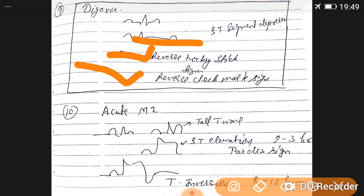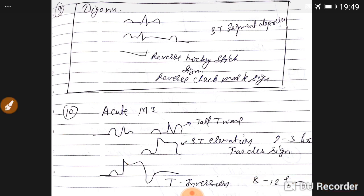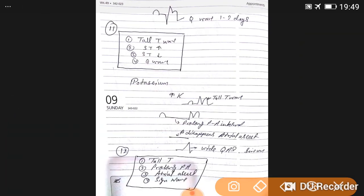Acute MI: we see firstly tall T waves. See here, this is tall T. Then ST elevation at two to three hours, then ST inversion at eight to twelve hours. Finally we see Q wave, this represents Q wave, at one to two days. So in acute MI we see tall T wave, then ST elevation, then ST depression, and Q wave finally.